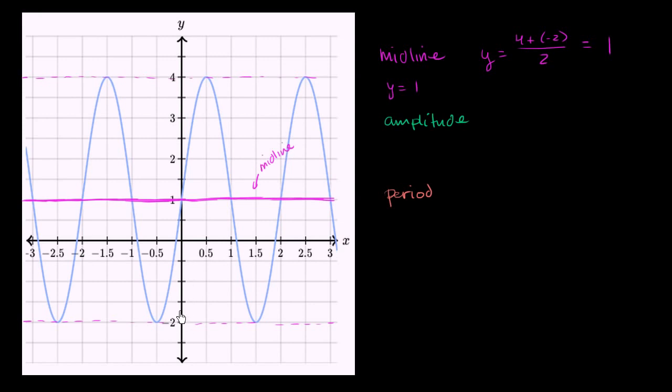Now let's think about the amplitude. Well, the amplitude is how much this function varies from the midline, either above the midline or below the midline. And the midline is in the middle, so it's going to be the same amount, whether you go above or below. So one way to say it is, at this maximum point right over here, how far above the midline is this?